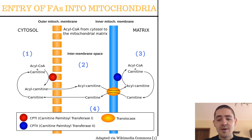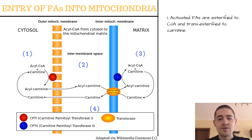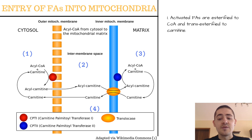This is a step-by-step process. The first step takes place in the cytosol where fatty acids are activated — esterified to coenzyme A (CoA) and transesterified to carnitine. Fatty acyl carnitine, or acyl carnitine, is formed.